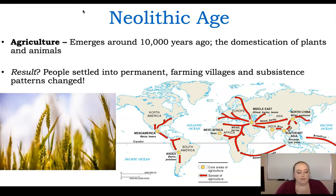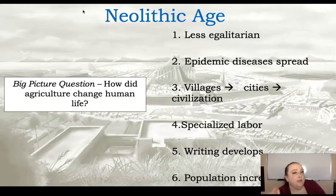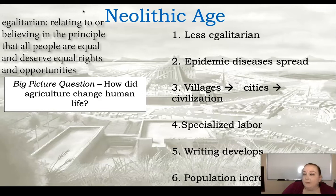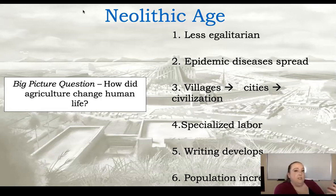This is the Neolithic Age. We start to go from moving around to settling down, because if you plant seeds you need to see what happens to them. You're going to settle in a permanent village, and when you settle down, populations start to grow. A result of the Neolithic Age is that we become less egalitarian — basically, everyone was equal before, but once we settled into bigger groups, populations became less egalitarian. Another result was that epidemic diseases spread.